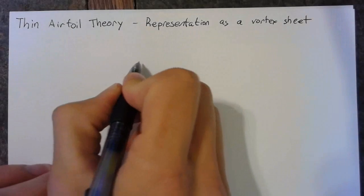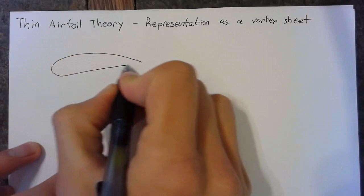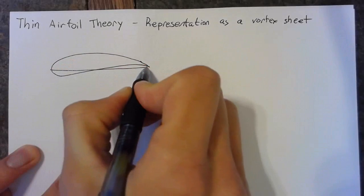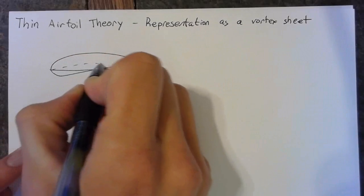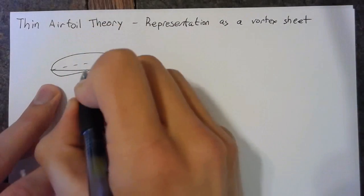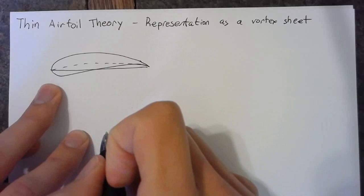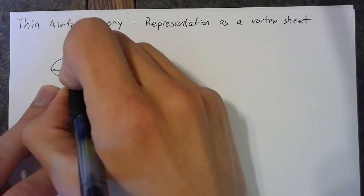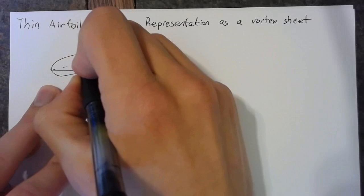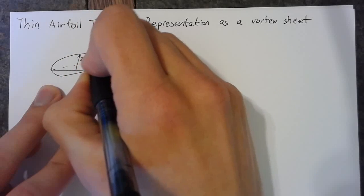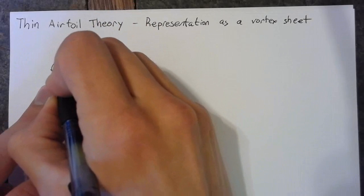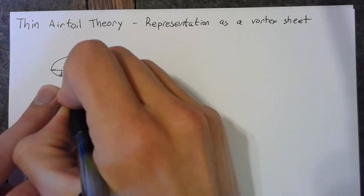Starting off with some basics, if we have some airfoil, it can be defined through a cord line and a camber line. In general, we will define the upper and lower surface of our airfoil from the cord line. Our upper surface will be some zu of x, and our lower surface is going to be zl of x.